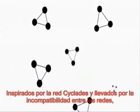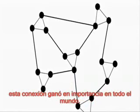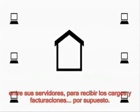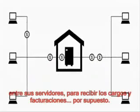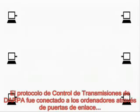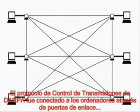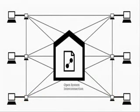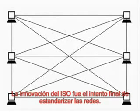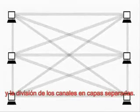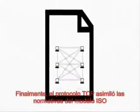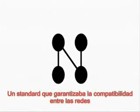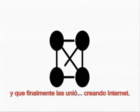Inspired by the Cyclades network, and driven by the incompatibility between the networks, their connection gained in importance everywhere. The phone companies developed the X.25 protocol, which enabled communication through their servers, in exchange for a monthly basic charge. DARPA's transmission control protocol was to connect the computers through gateways. The International Organization for Standardization designed the OSI reference model. The innovation of OSI was the attempt to standardize the network from its ends and the channel's division into separate layers. Finally, the TCP assimilated the preferences of the OSI reference model, giving way to the TCP/IP protocol — a standard which guaranteed compatibility between networks and finally merged them, creating the Internet.